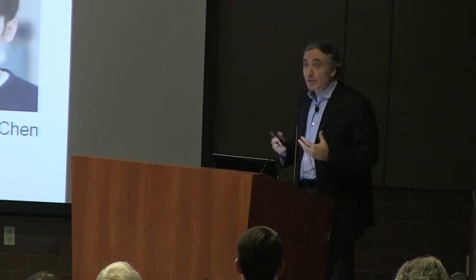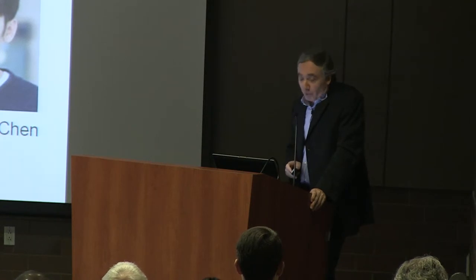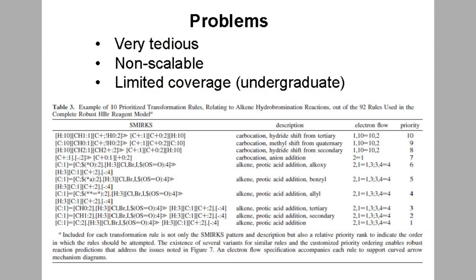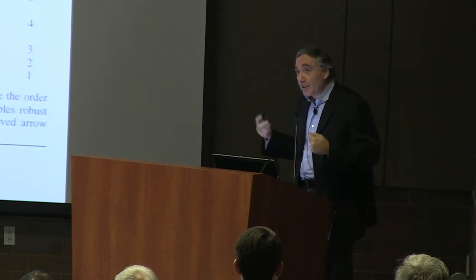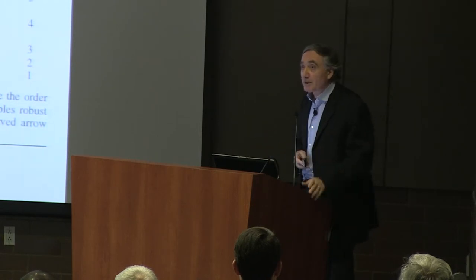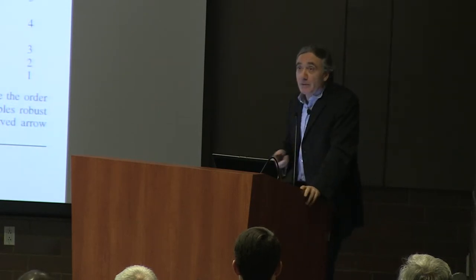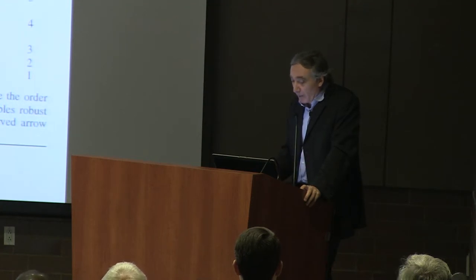But there is a problem with the rule-based approach: it's very tedious, you have to write these rules by hand, and it doesn't scale well because every time you add a rule there's a danger it may break previous rules, requiring consistency checks. The coverage is also limited — in this case we can only cover undergraduate organic chemistry, mostly. So the question is: how can we go beyond this and build an expert system for chemical reactions?